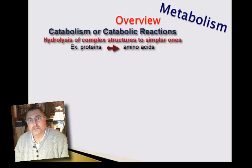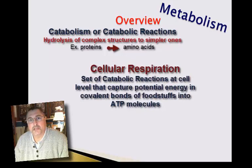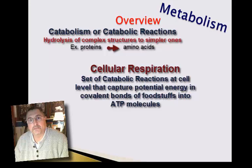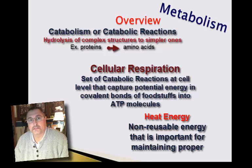Cellular respiration is the catabolism of foodstuffs — the breakdown of those foodstuffs and a transfer of the potential energy stored in them into molecules of ATP. This is only about 38% efficient in taking the energy stored in glucose molecules and converting it to usable energy in the form of ATP. The rest goes out as heat energy, which is very important because it ensures that we are warm-blooded organisms and our enzymes can function efficiently regardless of the external environment.